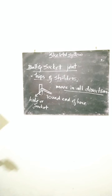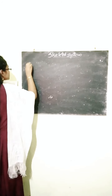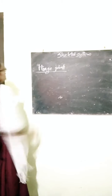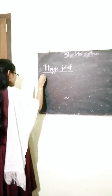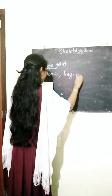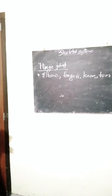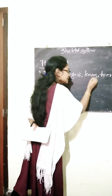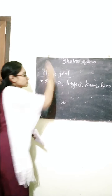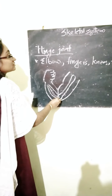Now we can move to the next type: the hinge joint. This hinge joint we can see in our elbow, fingers, knees, toes, etc. You can see a figure, and the joint at the elbow is the hinge joint. The elbow joint is one of the examples for the hinge joint.